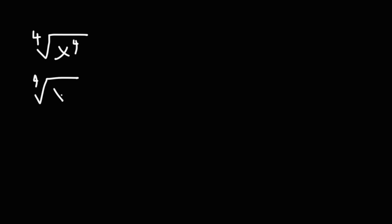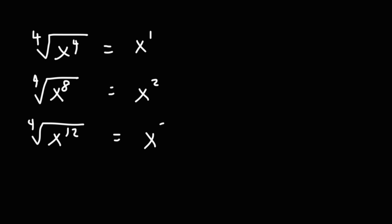Now go ahead and try these three problems: the fourth root of x to the fourth, the fourth root of x to the eighth, and the fourth root of x to the 12. Four divided by four is one, eight divided by four is two, and 12 divided by four is three. Now we do have an even index number, so we're going to have to use some absolute value symbols. For the first result, we have an odd exponent, so we need to put the absolute value symbol around x. For the second, we have an even exponent, so it's always positive — no absolute value needed. For the third, we have an odd exponent, so we do need to use the absolute value symbol.